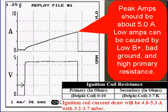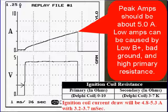Peak amps should be about 5 amps. Low amps can be caused by low B+ or bad ground, and high primary resistance is also a cause.